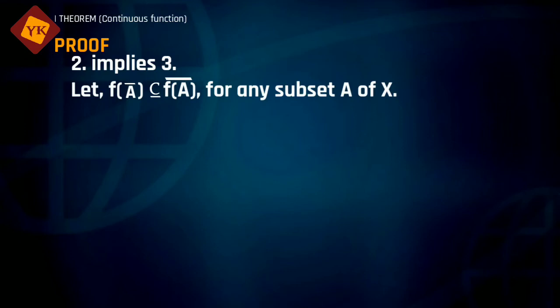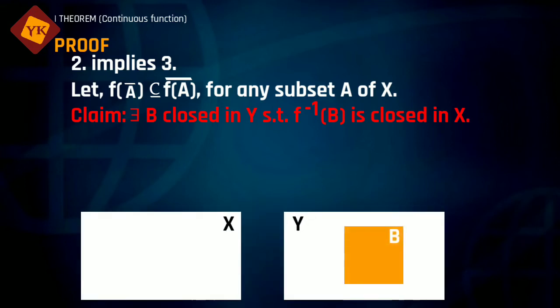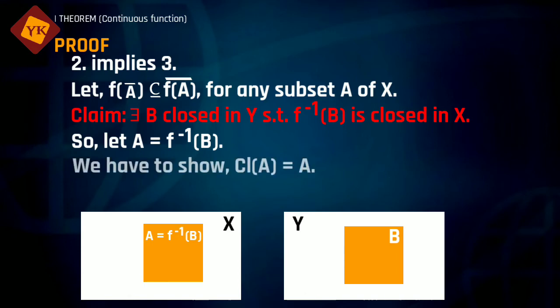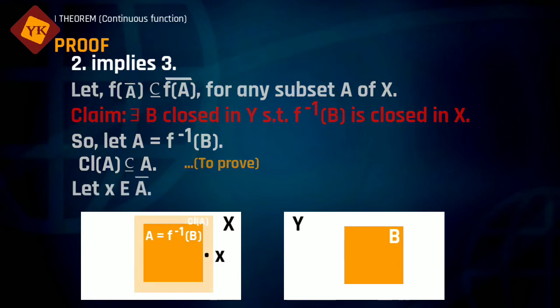Now we prove that statement 2 implies statement 3. For this, let A be any subset of X such that f(A-closure) is contained inside the closure of f(A). We have to prove that for every closed subset B of Y, f⁻¹(B) is closed in X. Let B be any closed subset of Y. To prove f⁻¹(B) is closed, we let A = f⁻¹(B). We need to show A is closed, i.e., that the closure of A equals A itself. One inclusion is obvious: A is always contained inside its closure. It remains to prove that the closure of A is contained inside A. To do this, let x be any element of the closure of A.